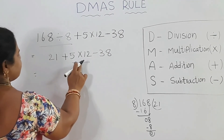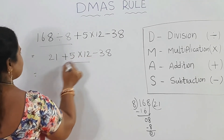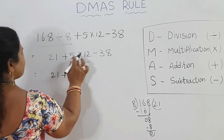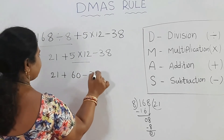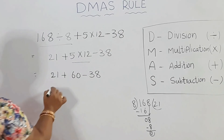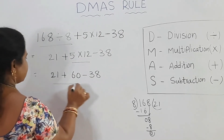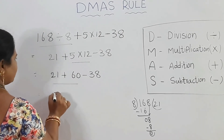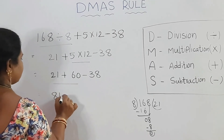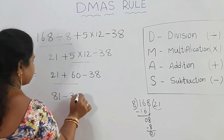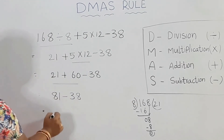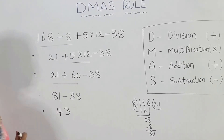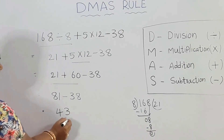Next, multiplication: 5 into 12 equals 60. So we have 21 plus 60 minus 38. Next, addition: 21 plus 60 equals 81, minus 38. Last step, subtraction: 81 minus 38 equals 43.